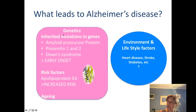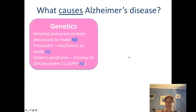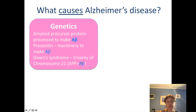Looking at what the genetics are actually doing, we can see patterns developing. The amyloid precursor protein is processed to make amyloid beta; the presenilins 1 and 2 are the machinery that makes amyloid beta; and Down syndrome's trisomy of chromosome 21 increases the amount of amyloid beta. Looking at this, we might think that amyloid beta must be the most important protein involved in the cause of Alzheimer's disease — some of the evidence is pointing towards its importance.